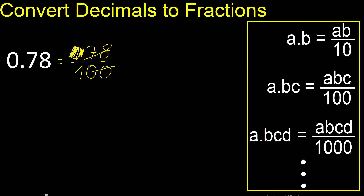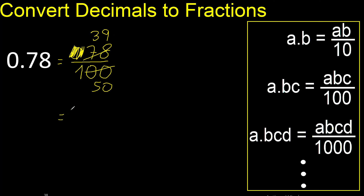Can be simplified because it can be divided by the same number. Divided by two, divided by two — thirty-nine. Divided by two — fifty. Finish, because it cannot be simplified.